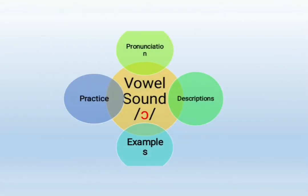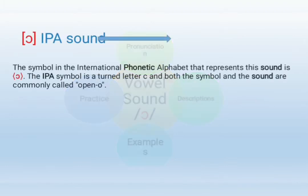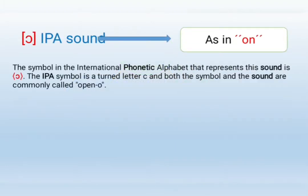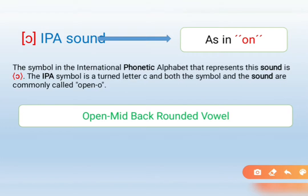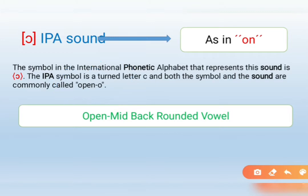We are going to start the vowel sound with pronunciation, description, example, and practice. This is the vowel sound that you can find in ON. The symbol in the International Phonetic Alphabet that represents this sound is the inverted C. Remember, you turn the letter C and you find this symbol. It is also called the open O — an open, mid, back, rounded vowel. This is how we call it.